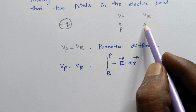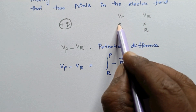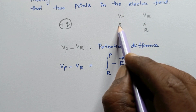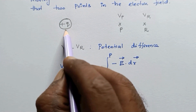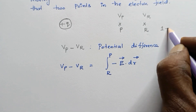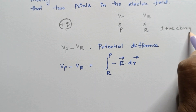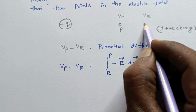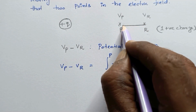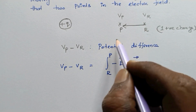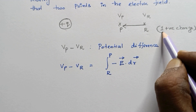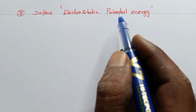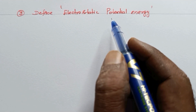The potential difference is the work done in bringing a unit positive charge from point R to point P. We have to do some work against the coulomb's electrostatic repulsive force, and that work is the potential difference. This is the answer for the second question. For electrostatic potential difference, we consider a unit positive charge.